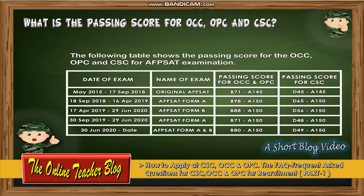What is the passing score for OCC, OPC, and CSC? For the ABSET original examination: passing score for OCC and OPC is 71 over 145; passing score for CSC is 45 over 145. For ABSET Form A: passing score for OCC and OPC is 98 over 150; passing score for CSC is 65 over 150.